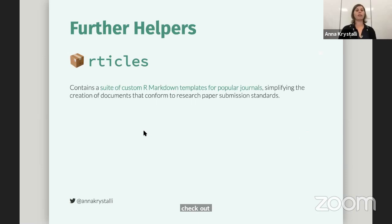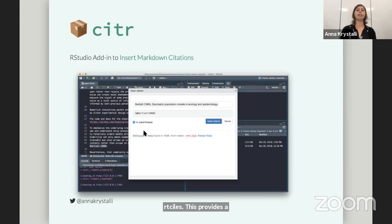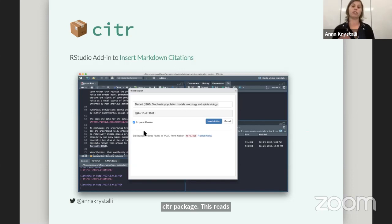There are a couple of other helpers that are really useful for writing papers in R. One of them is the rticles package, which provides a collection of R Markdown templates in the format of many popular journals. And then the other one is the citr package. This provides an add-in that is able to read the bibliographic information from a bib file and then allows the user to interactively insert citations into Markdown in their document.